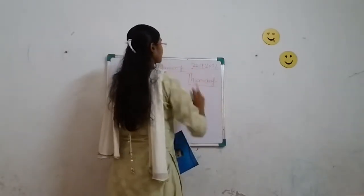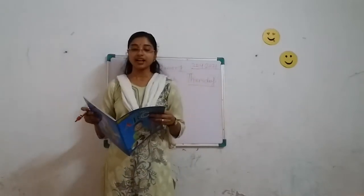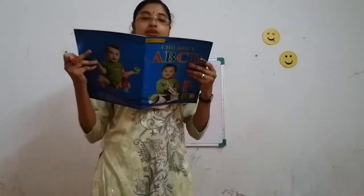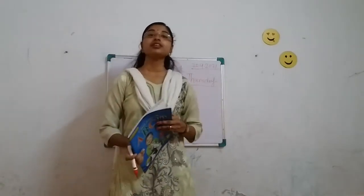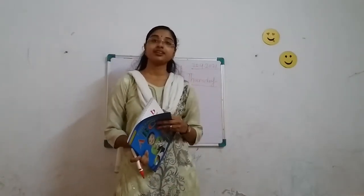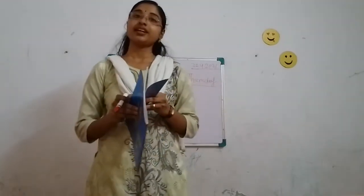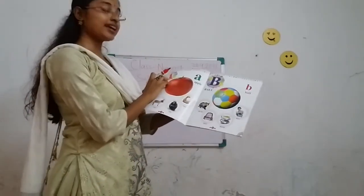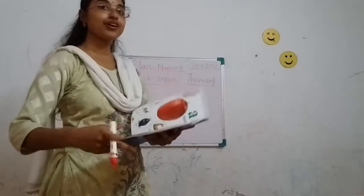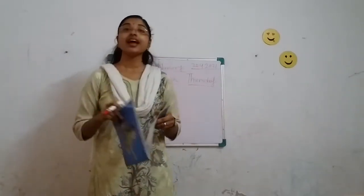Look. Okay, so children, in the previous class we have also read about A and B. So we will read again. This is A. A for apple. A for apple.